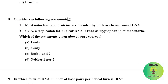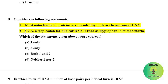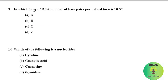Consider the following statements — which of the statements given above is or are correct? Most mitochondrial proteins are encoded by nuclear chromosomal DNA — this is the correct statement. UGA is a stop codon for nuclear DNA but is read as tryptophan in mitochondria — this is also a correct statement. So both statement one and two are correct.